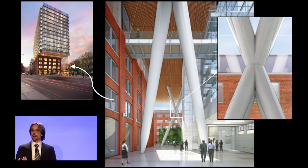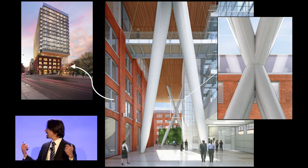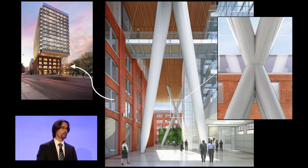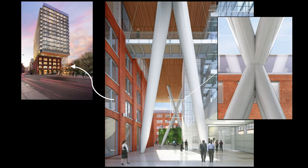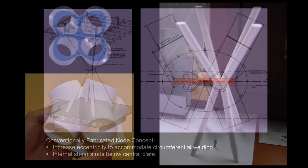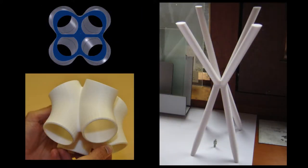There was a connection where eight tubular elements framed together right in the midsection of these frames in something that was going to be exposed to view — heavily loaded, complex geometry. That sounds like a good opportunity for casting. When they first tried to address this, they looked at ways to fabricate that connection by introducing a big thick plate and splaying the legs out, but a connection like that would not have been true to the original design intent.